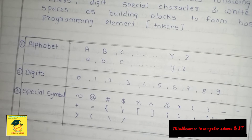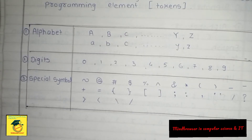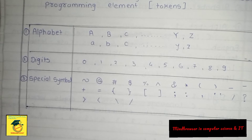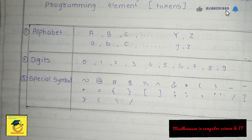So, C character set means these three to four points. In the next video we will learn data types. So please like, comment, and subscribe. Keep learning — our growth is turning, so keep learning.